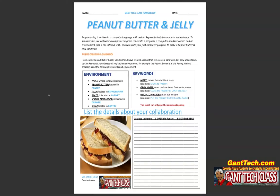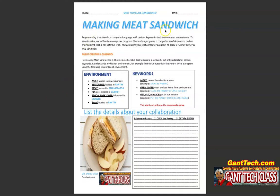In this exercise, you're going to write your first program — how to make a sandwich. You can either write a peanut butter and jelly sandwich or a meat sandwich, based on if you're allergic or not and what you have in your home.